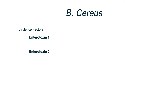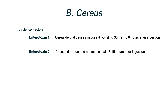As far as virulence factors go, there are two toxins that are responsible for the GI symptoms: Enterotoxin 1 and Enterotoxin 2. Enterotoxin 1 is a cereulide that causes nausea and vomiting, and the time frame to be on the lookout for is 30 minutes to 6 hours after ingestion.